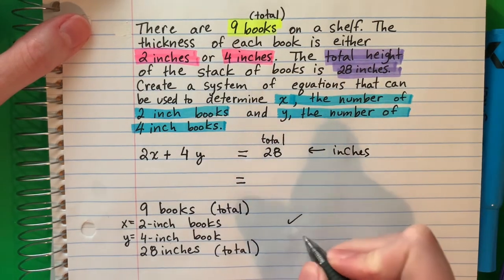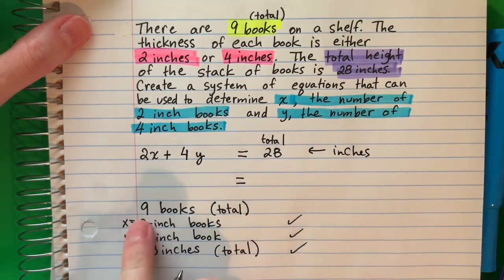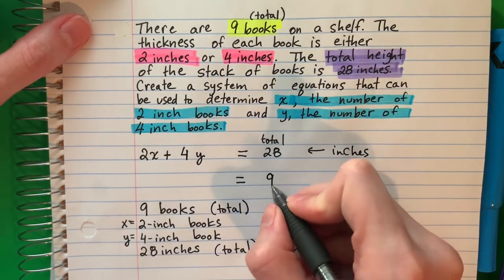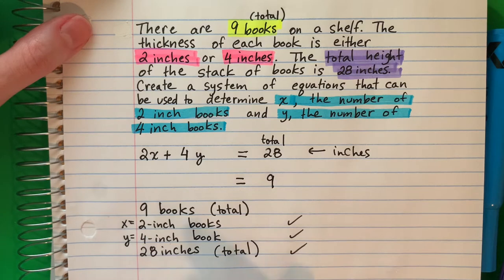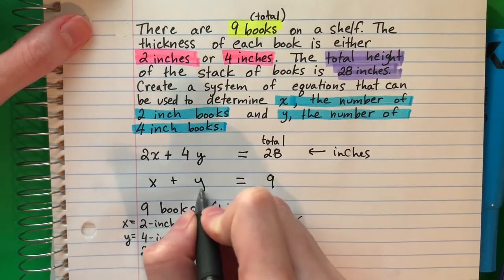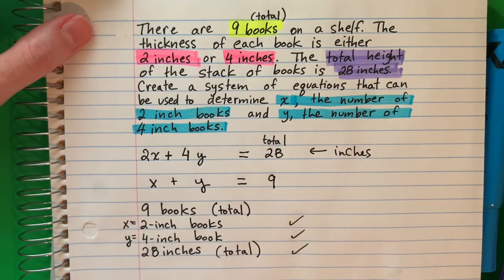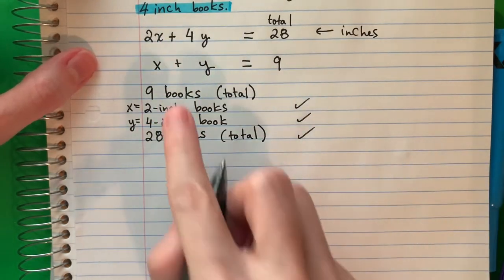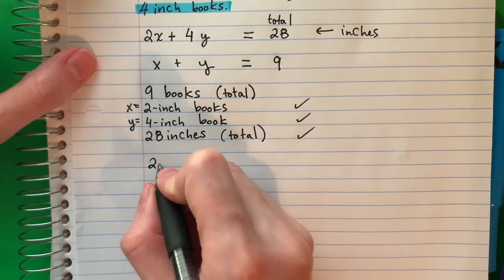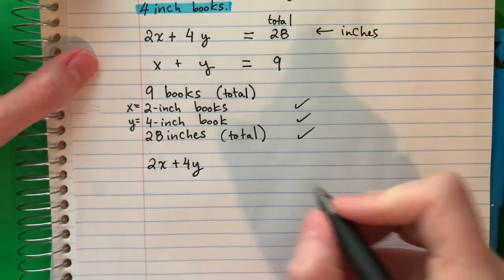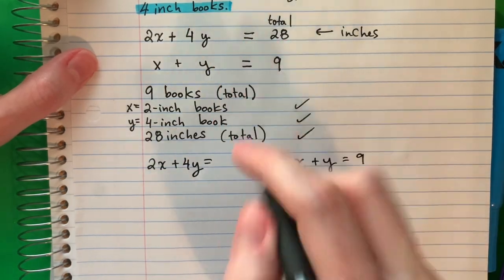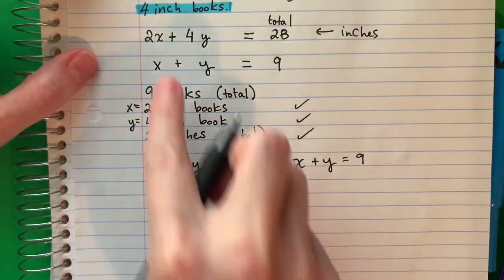So I finished this one. I still have this one. The nine is a total, so it has to go on the right. There are no more numbers, so simply just put x plus y without numbers. So now I'm going to solve these equations. I'm going to fix 2x + 4y = 28 and x + y = 9.